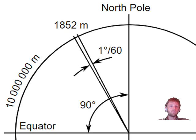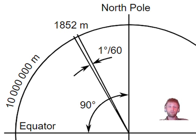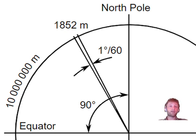The Nautical Mile is used for air, nautical, and space navigation. The unit of knots, which is the speed a ship is traveling, is used for speed calculations. Very importantly, the nautical mile has been standardized at 1852 meters.